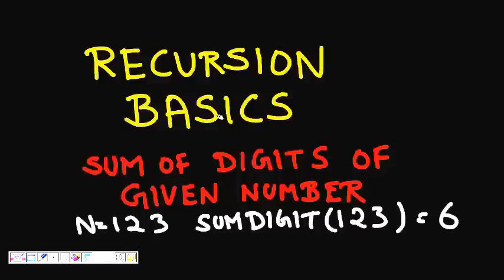After this lecture I hope you will understand what recursion is and how it works. We will start with the problem of finding the sum of digits of a given number. You are given an input integer n and you have to find the sum of its digits. For example, if n is 123, the digits are 1, 2, and 3, so the sum is 6.